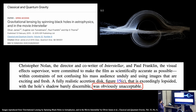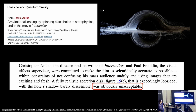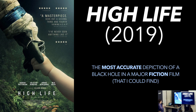Christopher Nolan decided that this fully realistic accretion disc in figure C looked exceedingly lopsided, and you couldn't even discern the black hole's shadow. You can't actually see the full shape very easily — there's other darkness that kind of obscures it. So he didn't like it, and it was described as self-evidently unacceptable in the paper, which I feel is more of an opinion than a statement of fact.